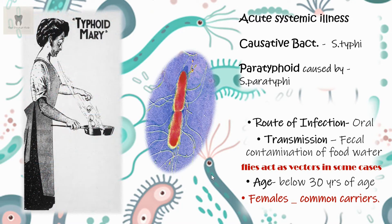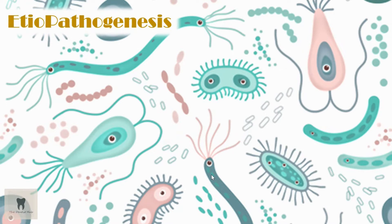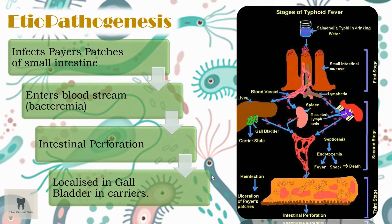That's Typhoid Mary — her name was Mary Mallon, an Irish cook who is known to have infected about 53 people with typhoid fever while being an asymptomatic carrier. Coming to the pathogenesis: Salmonella typhi enters the body through contaminated water, reaches the small intestine, and multiplies without affecting tissues. It then enters the bloodstream and lymphatic vessels, causing bacteremia. The multiplying bacteria invade the intestinal mucosa and can cause intestinal perforation. In asymptomatic carriers, the bacteria are localized in the gallbladder.